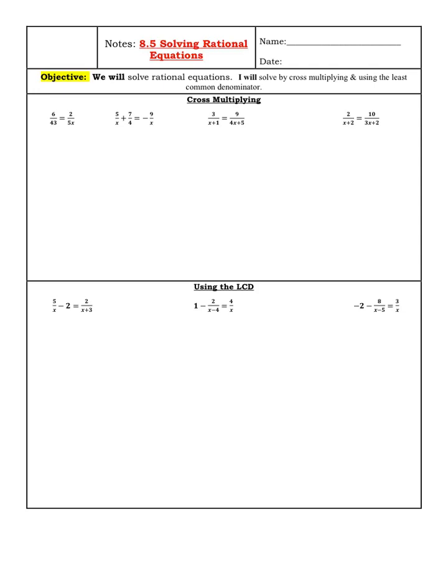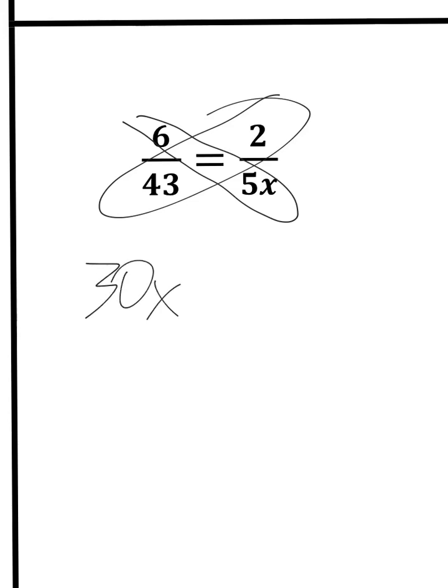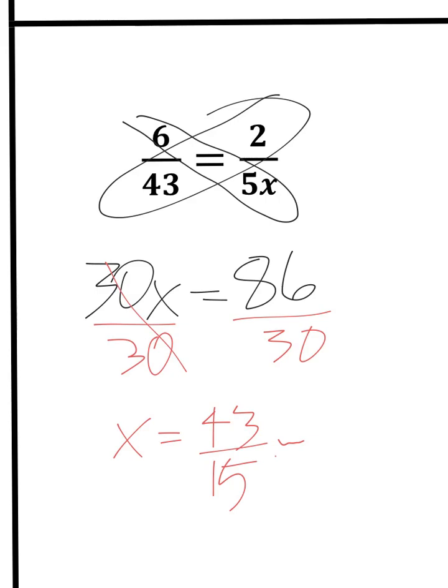So, cross multiplying. We're solving rational equations. We've been dealing with rational expressions for four sections now. Now we have them equal to something. The best way to start this off is to just refresh you about cross-multiplying. So here I have 6 over 43 equals 2 over 5x. We're going to cross-multiply and divide. What's 6 times 5x and what's 43 times 2? Well, 6 times 5x is 30x, and 43 times 2 is 86. So then you just have to divide. I'm going to divide both sides by 30. So that can reduce to 43 over 15, or if you get the decimal approximation, 2.867 would be the rounded answer.